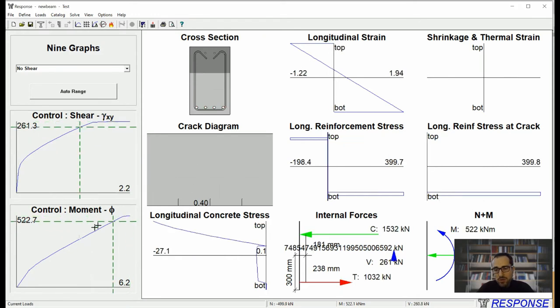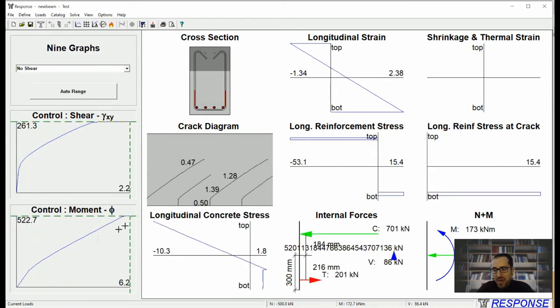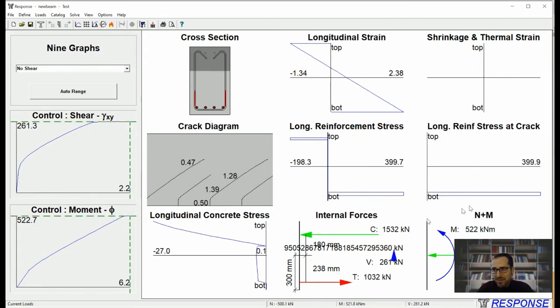This is the complete pushover type of response and you can see different forces at different levels. You can see the strain conditions. Top is this value which is compression. Bottom is that value. So it's pretty educational. You can use this to verify your hand calculations.